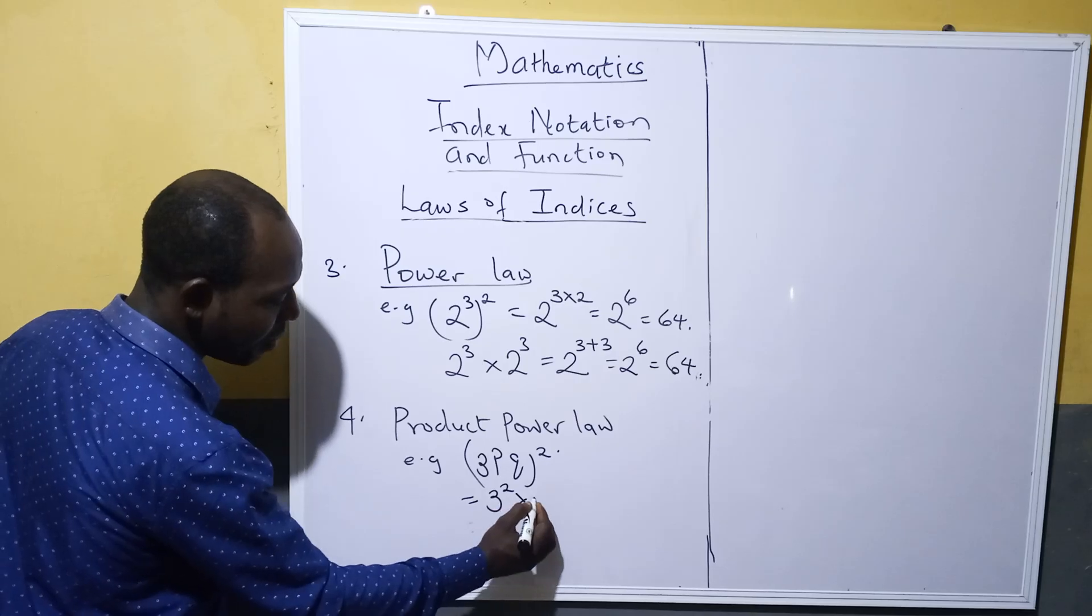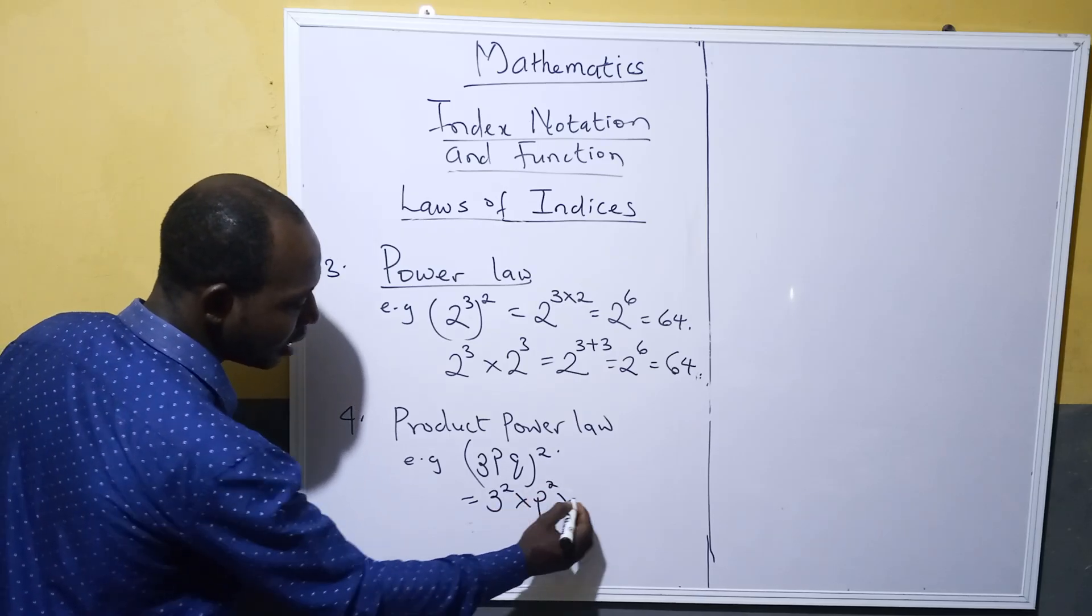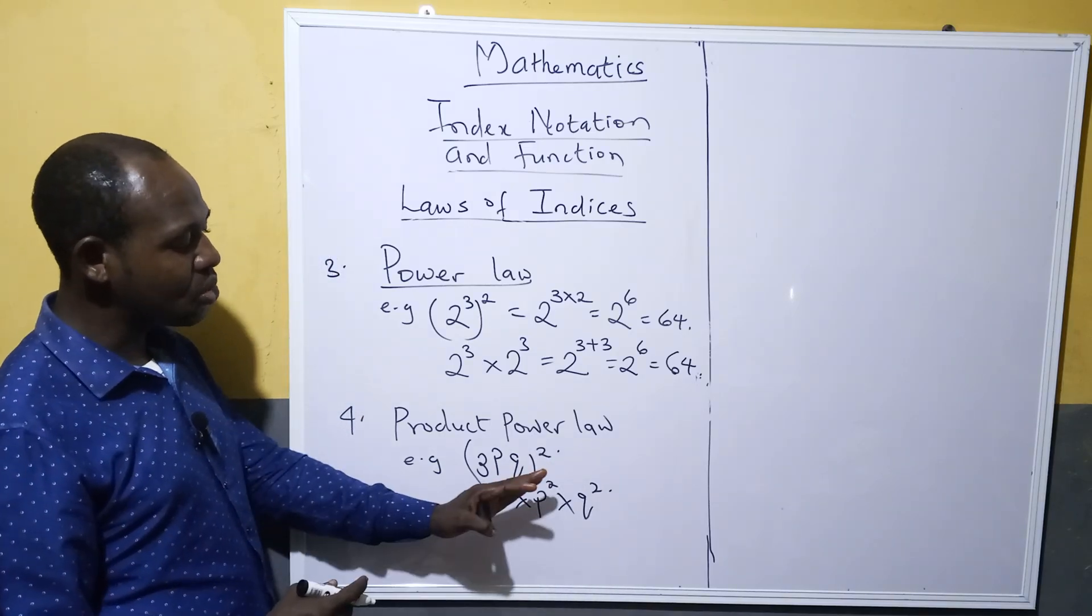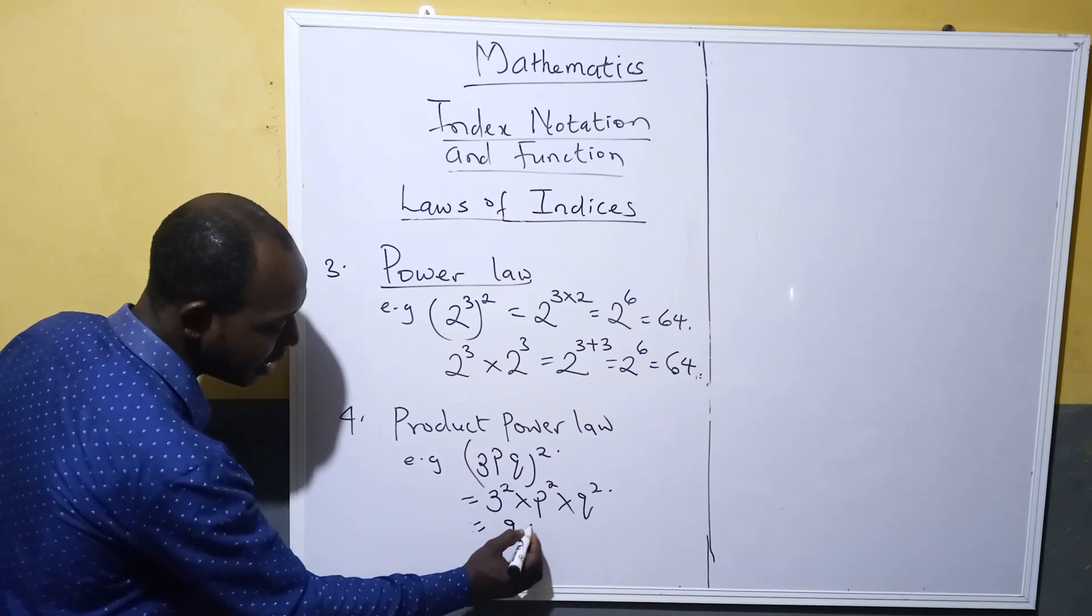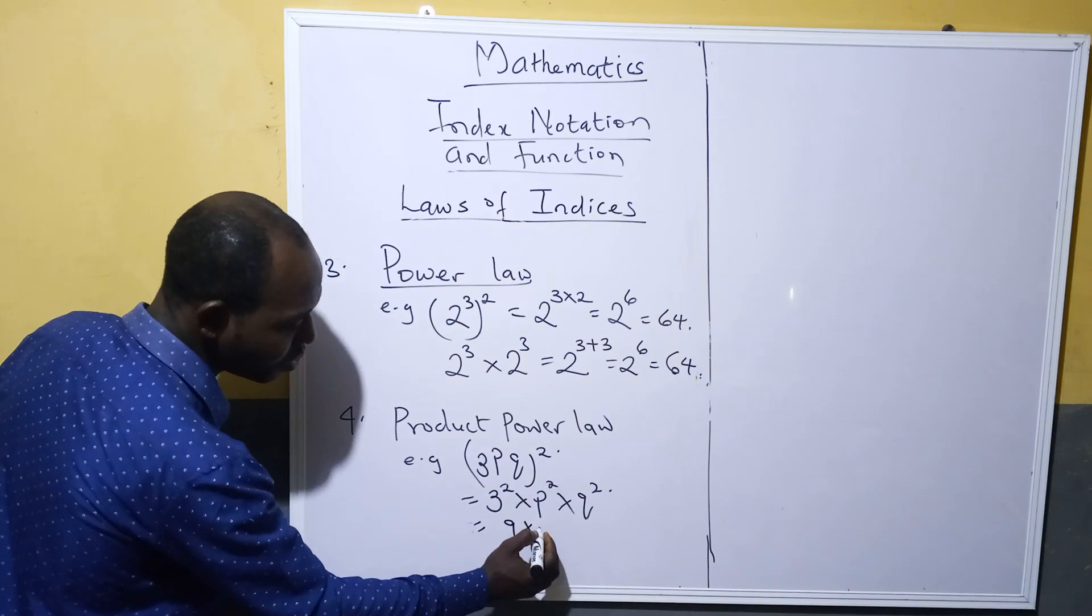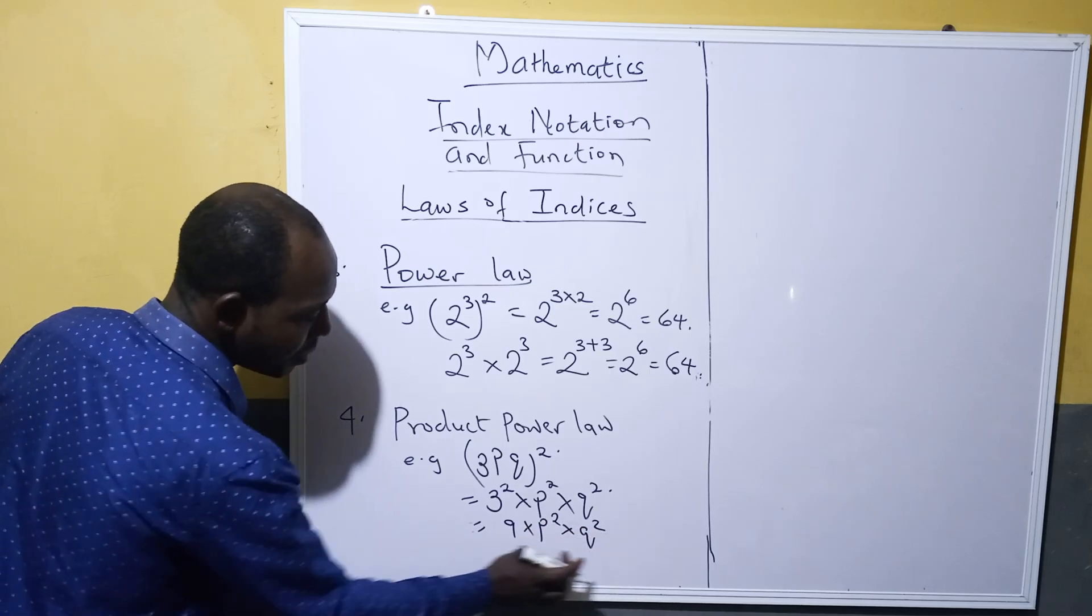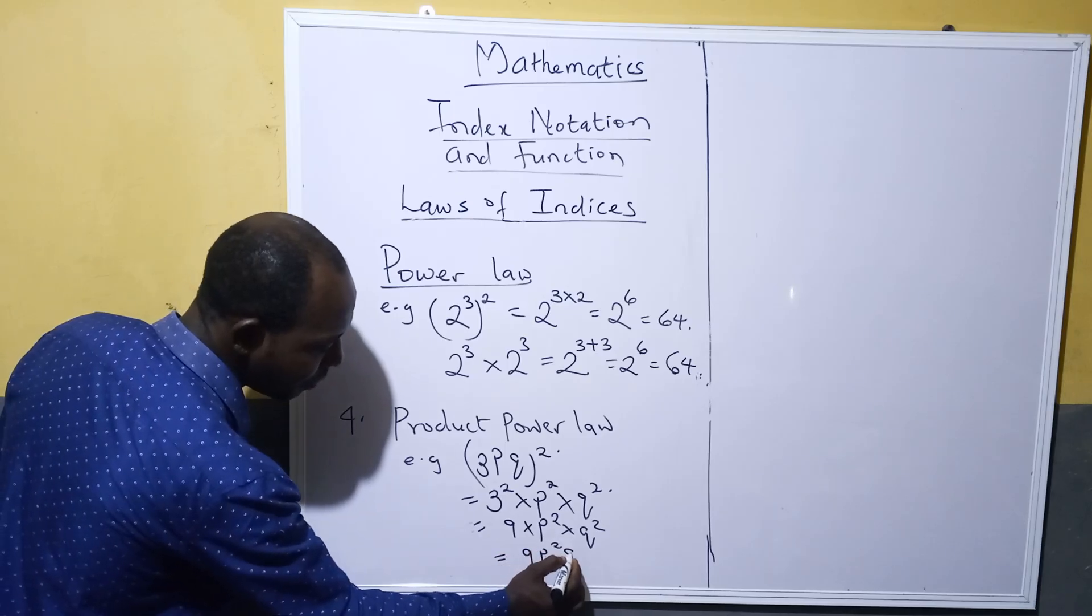That is 3 raised to power 2 multiplied by the letter p raised to power 2 multiplied by the letter q raised to power 2. We simplify: 3 to power 2 is 9, times p squared times q squared. Multiply that together you have 9p²q².